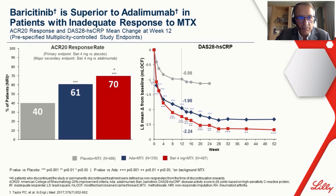The primary outcome was ACR20 by week 12. Baricitinib 4 mg per day is shown in red, adalimumab plus methotrexate in dark blue, and placebo in gray. Baricitinib plus methotrexate was superior to placebo, but also significantly superior to adalimumab by week 12, with the same result seen for DAS28 changes through 52 weeks.